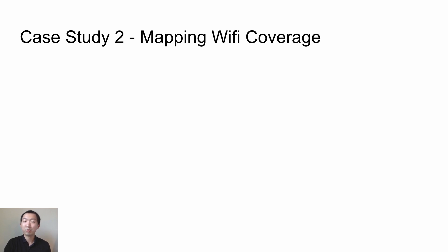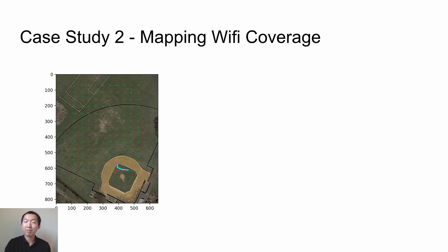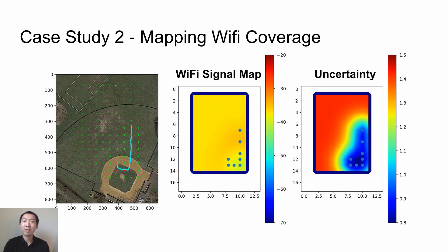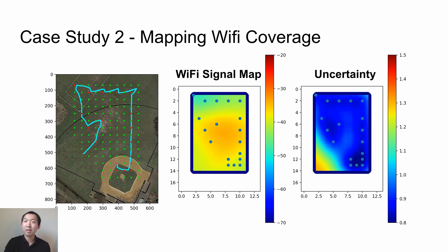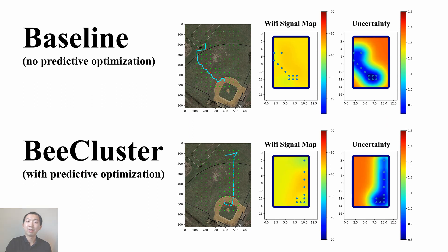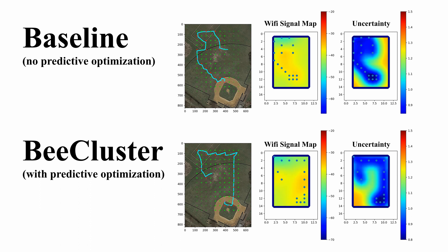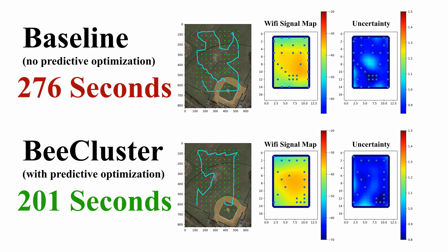In the second case study, we used drones to create a Wi-Fi coverage map. The program first splits the region of interest into about 140 grid cells and creates a task for each cell. Then the drone measures Wi-Fi signal strength at those locations. Once measurement is collected, we use a Gaussian process model to estimate the uncertainty of the Wi-Fi signal strength at each location. If the uncertainty is below a threshold, we cancel the corresponding tasks. In this case, the drone doesn't need to visit all 140 tasks, but can still create the Wi-Fi coverage map with accuracy bounds. B-Cluster predicts this cancellation behavior and uses it to optimize the route, resulting in a more efficient drone route compared to a baseline without predictive optimization.